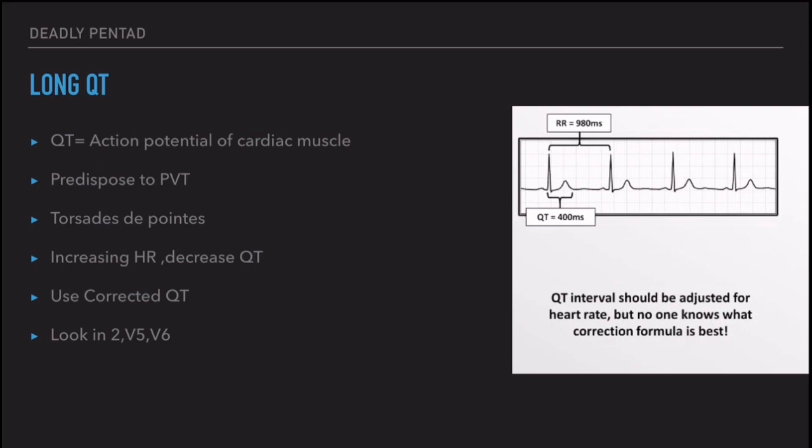Corrected QT is very important in syncope because long QT or short QT syndrome can lead to arrhythmias, which can cause syncope. The QT interval represents the action potential of cardiac muscle. Whenever there is a prolonged QT, it predisposes to polymorphic ventricular tachycardia. Polymorphic ventricular tachycardia in the presence of long QT is called Torsades de Pointes.